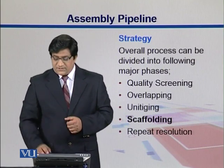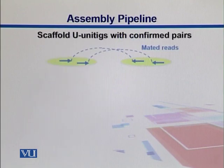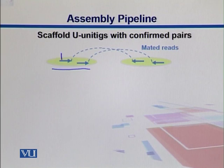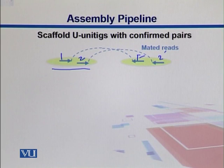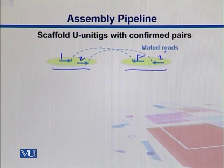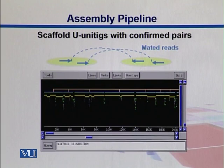Next is scaffolding, where we put unique unitigs together with the help of paired-end reads. One member of the pair aligns to one scaffold and the other member aligns to a second scaffold. We can then look at the distance between them and hypothesize that these two fragments can be placed together, confirming whether the distance is appropriate. Here is a diagram from the software illustrating the scaffolds.